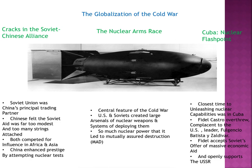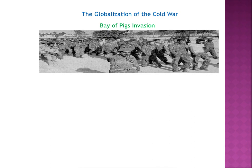Cuba was the closest time to unleashing nuclear capabilities — the closest we thought we were really going to go to war with the Soviet Union. Cuba let the Soviet Union place missiles on their land. Fidel Castro had overthrown the complacent leader Fulgencio Batista. The Soviets saw this, said they'd support Castro with economic aid if he let them place missiles there. Castro agreed. He accepted the Soviet's offer of massive economic aid and openly supported the USSR. Now there was a communist country even closer to the United States, and this really worried the U.S.